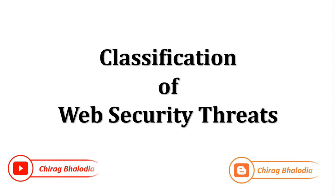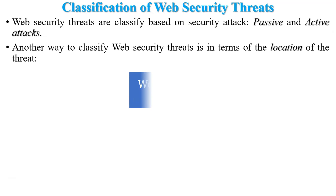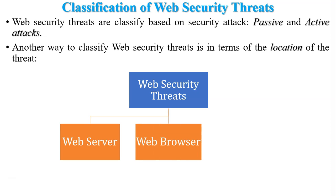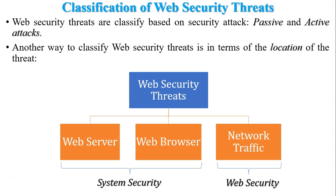Classification of web security threats: threats are classified based on security attacks, which may be passive or active. Another way to classify threats is by location — web servers, web browsers, and network traffic. Web server and web browser fall under system security, while network traffic falls under web security.